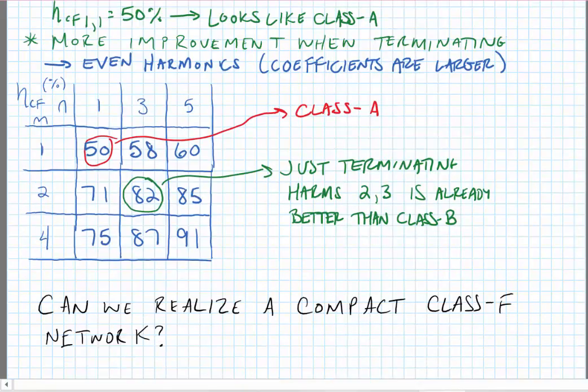We're going to stop there for today. Next, we're going to look at whether we can realize a more compact class F network that doesn't rely on all of these harmonic terminations and instead just relies on a few passive components — just a couple of inductors or capacitors.